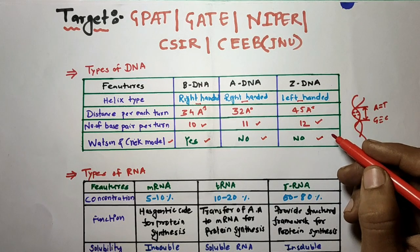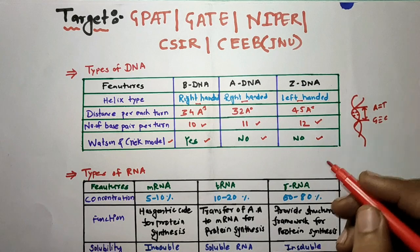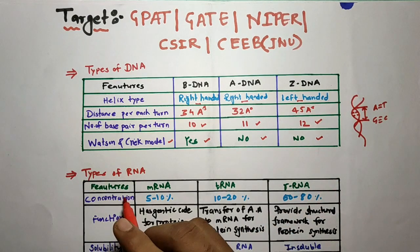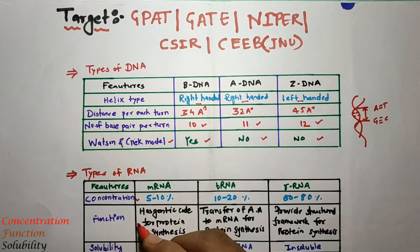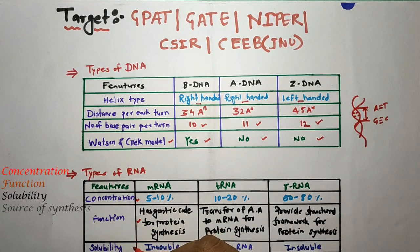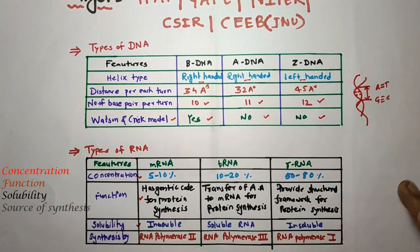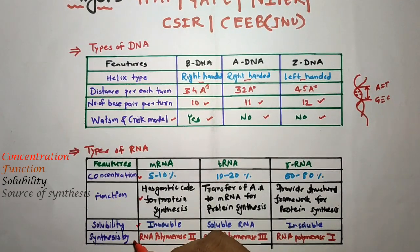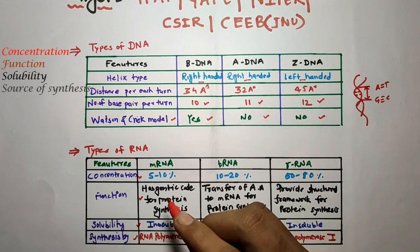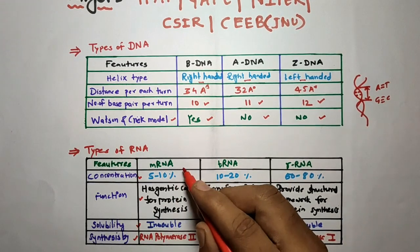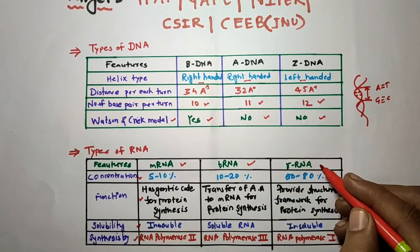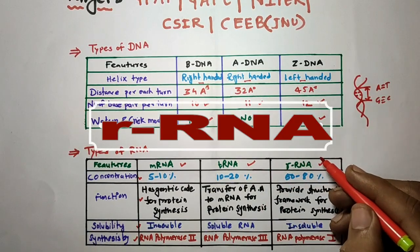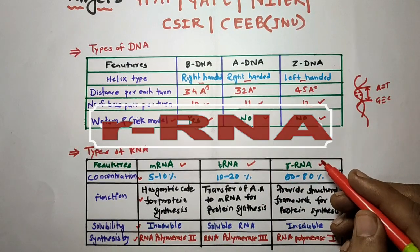Now we will discuss the types of RNA. We differentiate RNA on the basis of their concentration, their functions, their solubility, and based on where it is synthesized. There are three types of RNA: the first one is mRNA, the second one is tRNA, and the third one is rRNA.